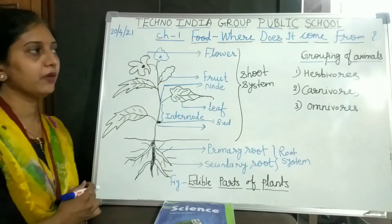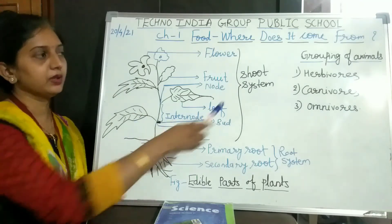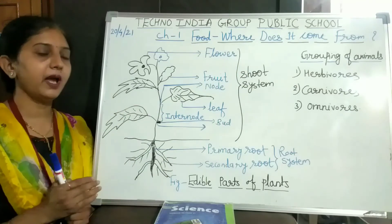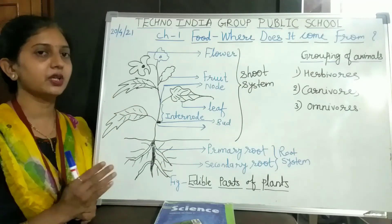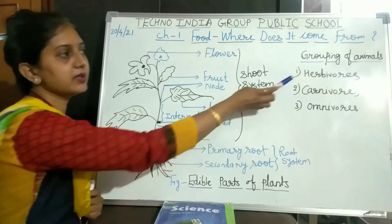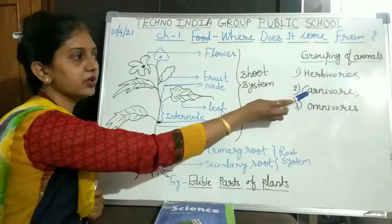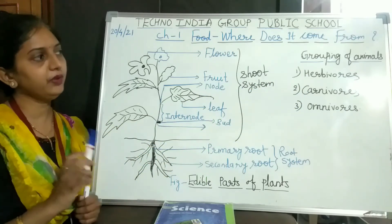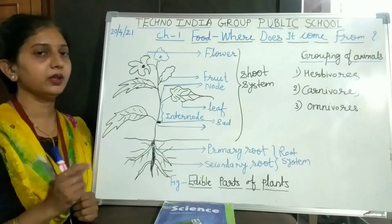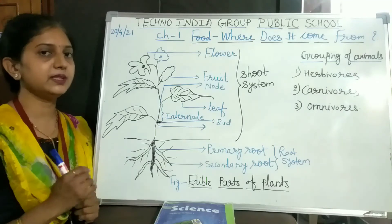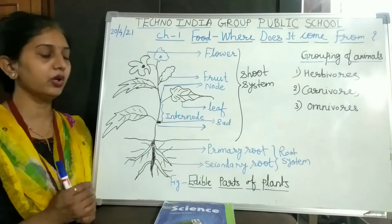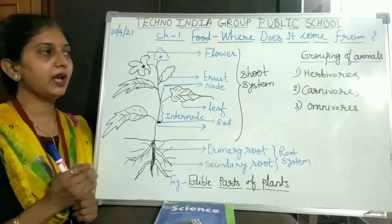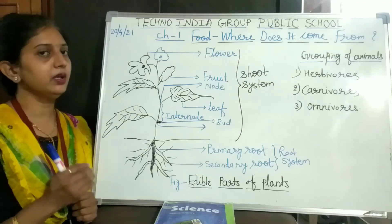Our next topic in this chapter is the grouping of animals. Animals are grouped majorly into three parts: herbivores, carnivores, and omnivores. Why do we group animals into these three parts? Because it depends on the eating habits of the animals.